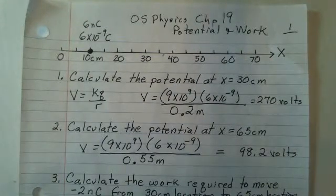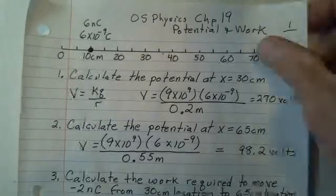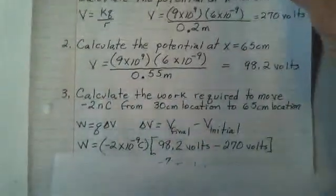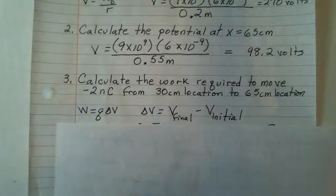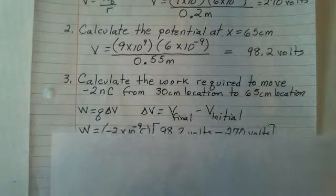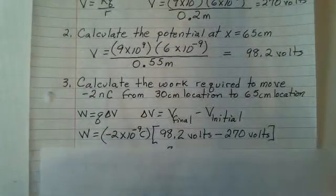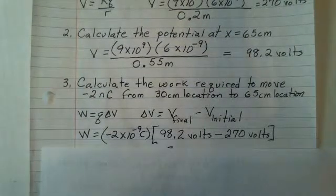We calculate work with Q times delta V. Delta V, the change in potential, is potential final minus potential initial. We've already calculated those numbers. So taking this minus 2 nanocoulomb charge,